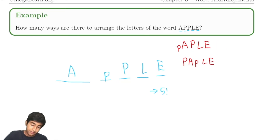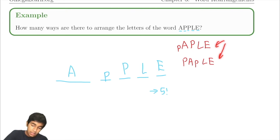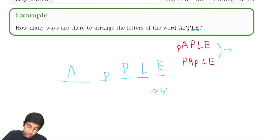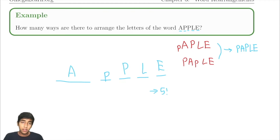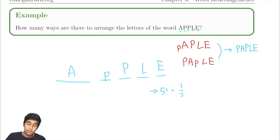If we were counting five factorial, we would count these as two arrangements. But in reality, these two arrangements become just one arrangement — P, A, P, L, E, just one. So essentially, from all these five factorial arrangements, for every two we get one valid arrangement.